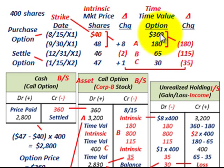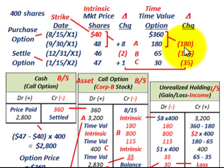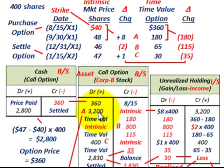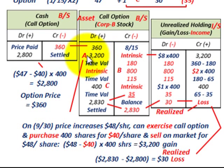For the time value, it's gone down. We started out with $360 and at this date it's gone down to $180, so we have a decrease of $180. Going to our call option account, this decrease reduces the call option, so we credit it for $180 for the time value portion and recognize an unrealized holding loss of $180. That's how we take care of our intrinsic and time portions for the first period.